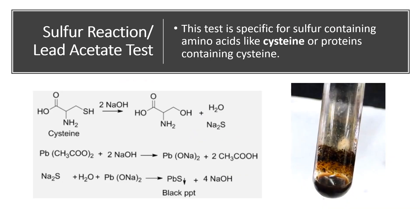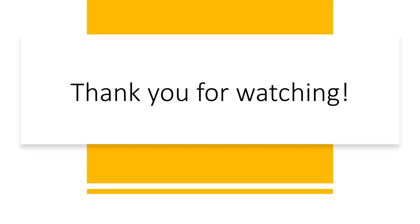For our last test, we have the sulfur reaction or lead acetate test. This test is specific for sulfur-containing amino acids like cysteine or proteins containing cysteine. When a sulfur-containing amino acid like cysteine reacts with lead acetate under alkaline conditions, organic sulfur is converted to sulfide, and a brownish-black or gray precipitate is formed, which is lead sulfide. That's it for our discussion for today. Thank you for watching and stand by for more biochemistry discussions.